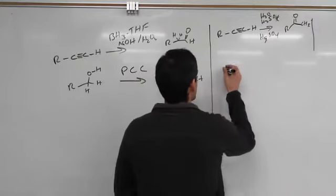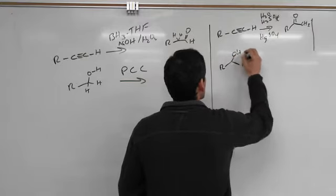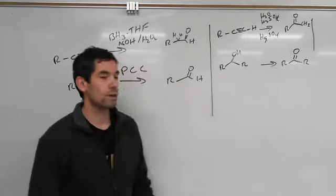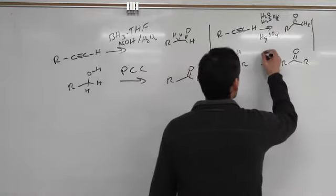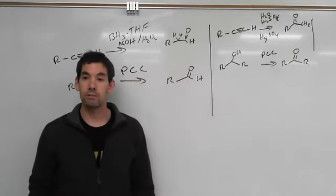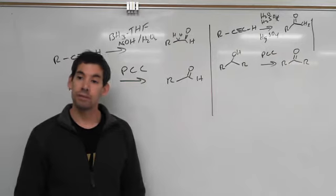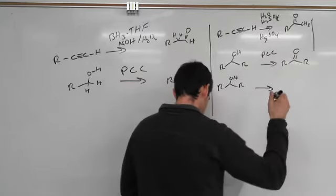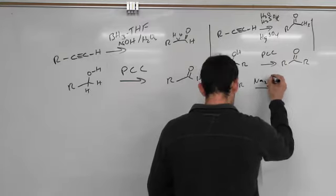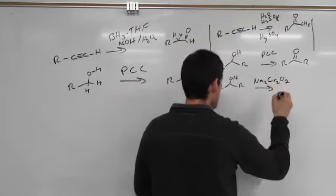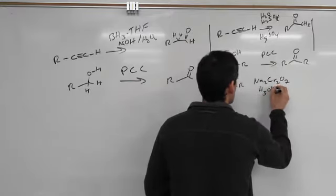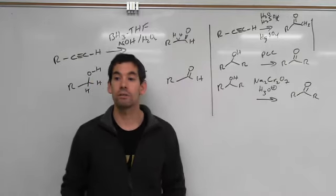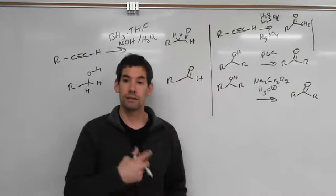We can also take a secondary alcohol. There are a couple of reagents that can turn secondary alcohols into ketones. We can use PCC — that will work, it's a little slower, but we can still convert a secondary alcohol to a ketone. We can also react it with Na2Cr2O7 with acid. Both of these oxidations convert the secondary alcohol into a ketone.